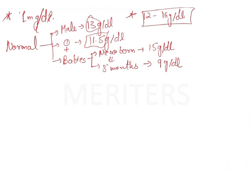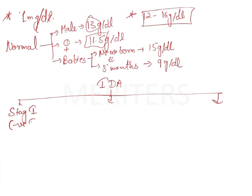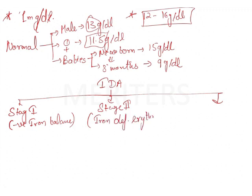In iron deficiency anemia, there are three stages. Stage one involves a negative iron balance. Stage two is the stage of iron-deficient erythropoiesis. Stage three is the real iron deficiency anemia, which is why we call it absolute IDA.